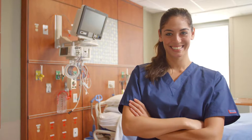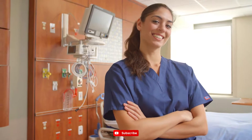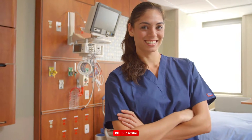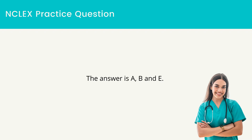Before moving on to learn about laboratory tests, let's try a practice question. This is a select all that apply question. A nurse is assessing a client following a gunshot wound to the chest. For which of the following findings should the nurse monitor to detect pneumothorax? Select all that apply. A. Tachypnea. B. Deviation of the trachea. C. Bradycardia. D. Decreased use of accessory muscles. E. Pleuritic pain. The answer is A, B, and E.